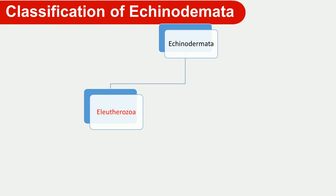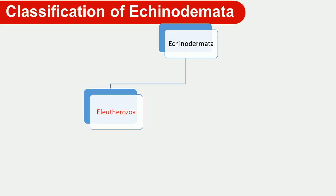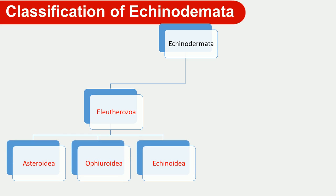The first subphylum is Eleutherozoa. Those Echinoderm animals that are free-living are placed in Eleutherozoa — 'Eleuthero' means free and 'Zoa' means animals, so free-living animals. Eleutherozoa is divided into four classes: Asteroida, Ophiuroidia, Echinoidia, and Holothuroidia. All Eleutherozoans are free-living.